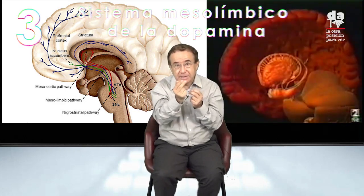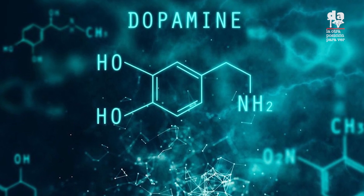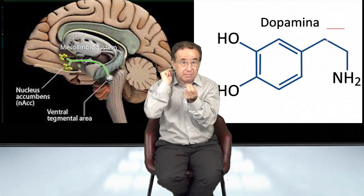La tercera instancia es el sistema mesolímbico de la dopamina. Este sistema genera todos los mecanismos de placer, de tranquilidad, de atracción que tenemos los seres humanos, o para decirlo en otras palabras, todos los mecanismos de retribución y de recompensa. Me alegro porque un equipo deportivo pierde, hay personas que se alegran por el sufrimiento de otras, me alegro porque puedo ganarme una beca o una lotería. Biológicamente esos mecanismos de recompensa se originan a partir de la dopamina que produce el sistema mesolímbico, y me alegro no por el resultado, sino por la expectativa del resultado.